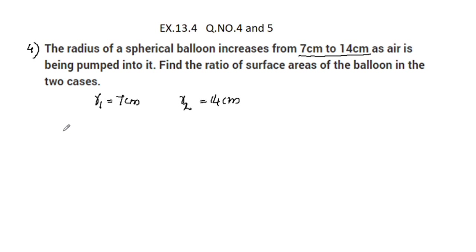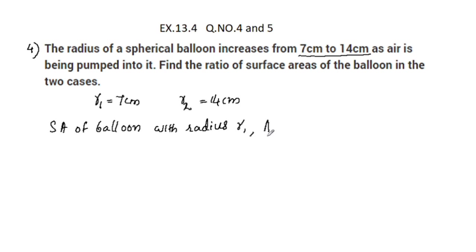Now we find the surface area of the balloon. The surface area of a sphere is 4πr². For r1, surface area A1 is equal to 4 into 22 by 7 into r squared. We substitute the values: 4 into 22 by 7 into r.